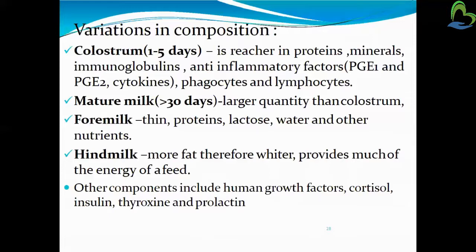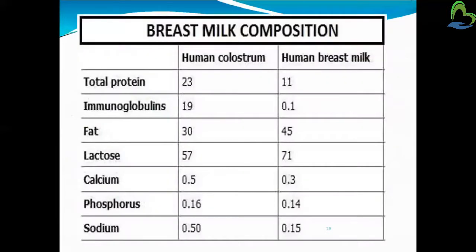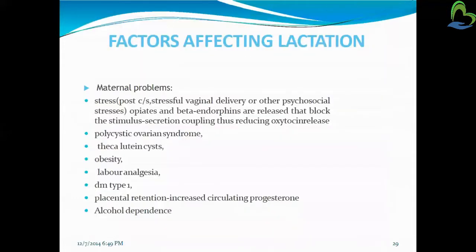Other components of breast milk include human growth factors, which help in the baby's growth and development, as well as cortisol, insulin, thyroxine, and prolactin. A table is also provided showing values for human colostrum versus human breast milk, listing different components such as protein, immunoglobulin, fat, lactose, calcium, sodium, and phosphorus.